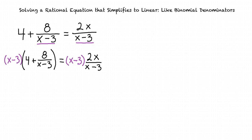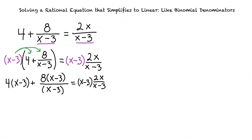So we multiply both sides by x minus 3. Our equation becomes the quantity x minus 3 times 4 plus 8 over the quantity x minus 3, equals x minus 3 times 2x over the quantity x minus 3. We then distribute x minus 3 on the left side, leaving us with 4 times the quantity x minus 3 plus 8 times the quantity x minus 3 divided by the quantity x minus 3, equals the quantity x minus 3 times 2x divided by the quantity x minus 3.